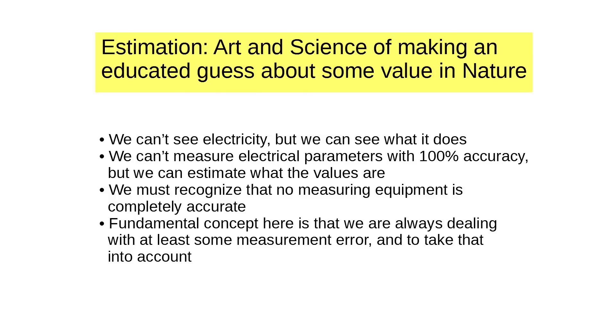So I want to talk about how to make measurements. Estimation is the art and science of making an educated guess about some value in nature. Underlying this is the idea that we will never know what a value like voltage or current actually is precisely to the last decimal place. We can't. But we can estimate what it is. We can't see electricity, but of course, we see what it does. And we can see what it does by using a meter or voltmeter or an ammeter or something like that.